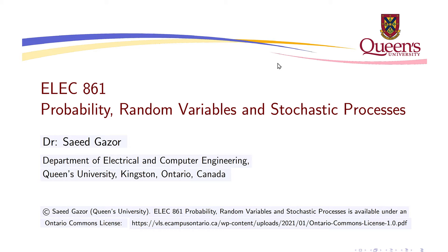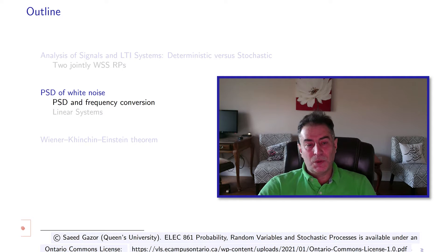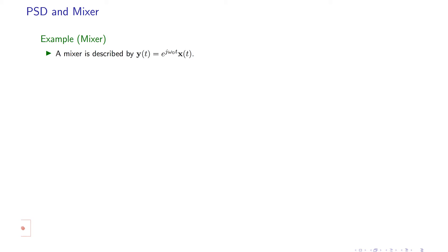In this example, we consider a wide-sense stationary random process x of t, and then we give it to a mixer. That means we multiply it by e to the power of j omega t. This is a conventional mixer which is used in all of your cell phones. A mixer is described by an input-output relationship: x of t is multiplied by a pure complex sinusoid, e to the power of j omega naught t. Remember that this has cosine of omega naught t plus j times sine of omega naught t.